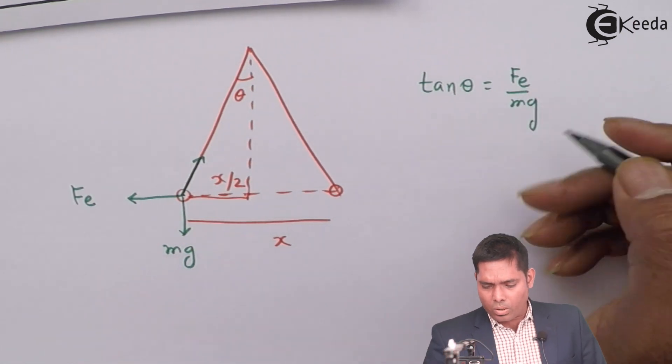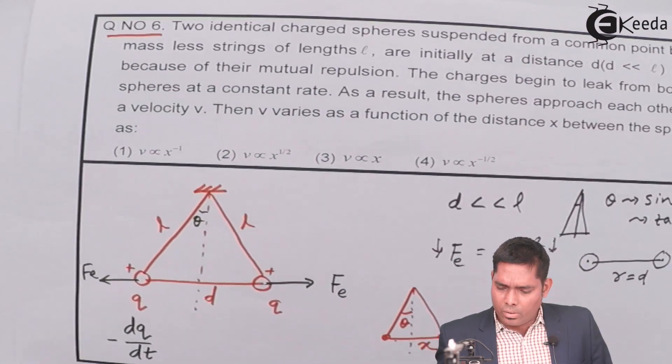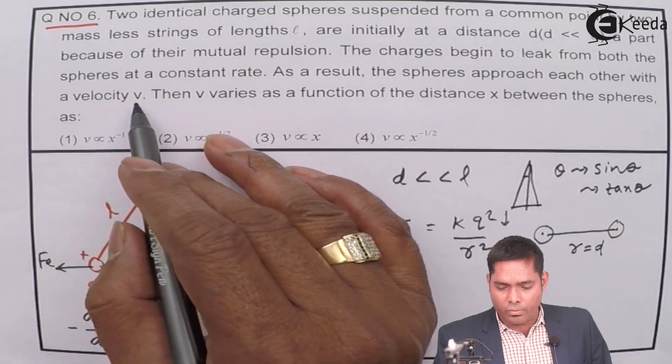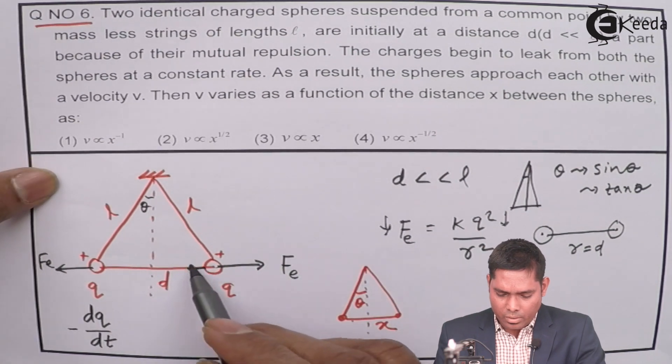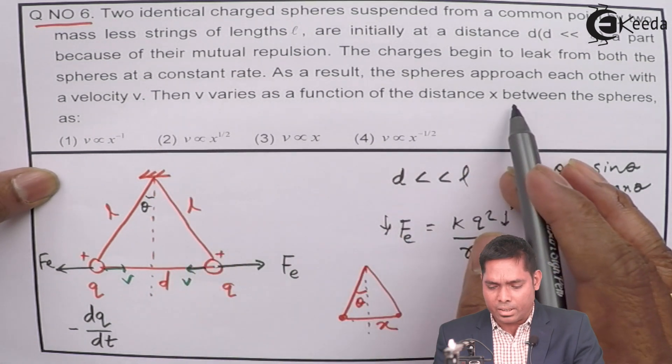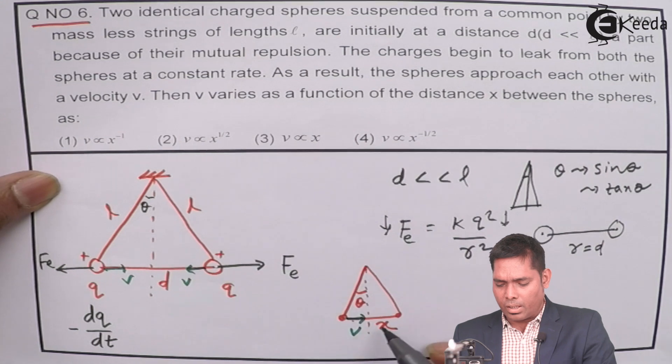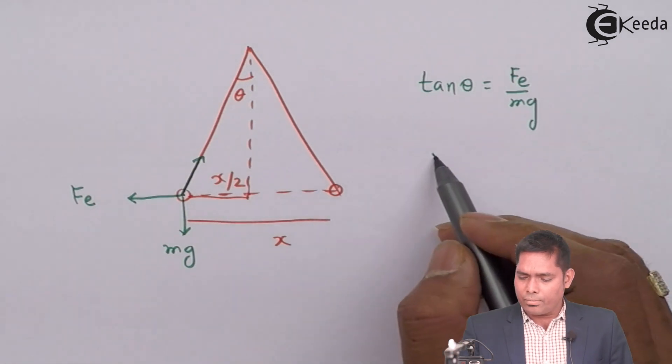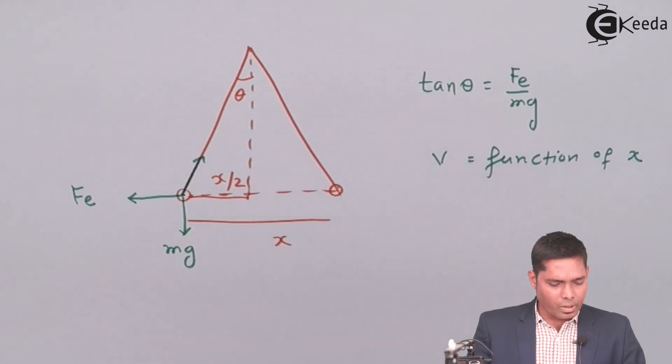If I do so, tan theta is Fe over mg, and I have to find the spheres approach each other with a constant velocity. So they will move towards each other with a constant velocity. Then, V varies as a function of distance X between the spheres as. So this variation of V with respect to any instantaneous position, this V and X relation we have to establish. So we have to find V as a function of X. This is the question.